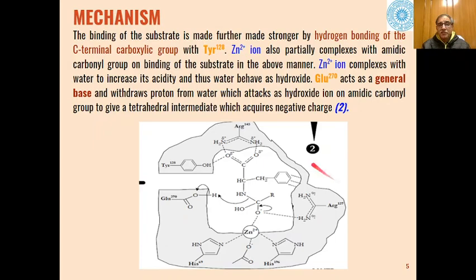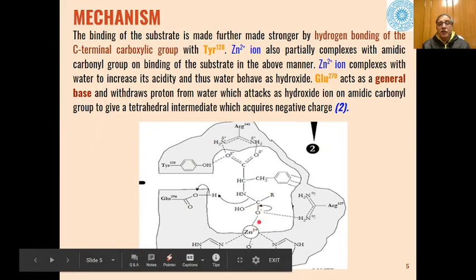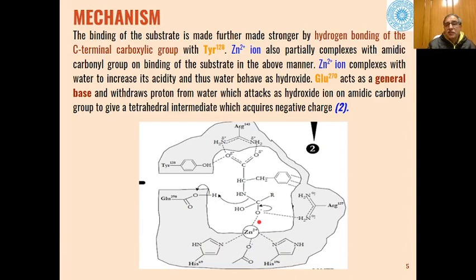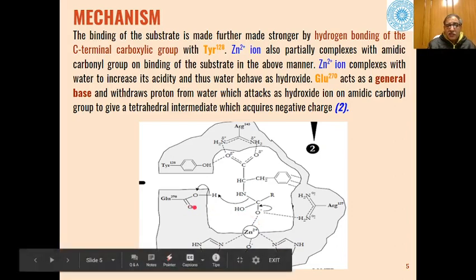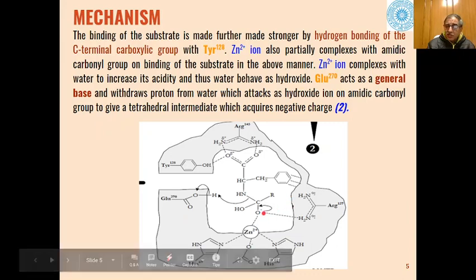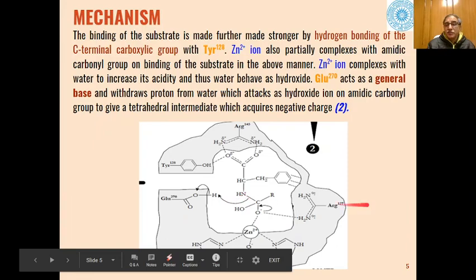In the next step, the binding of the substrate is made further stronger by hydrogen bonding with tyrosine 128. Zn2+ ions also partially complexes with amidic carbonyl to further strengthen the enzyme-substrate complex. This will act as a general base and this proton will be withdrawn by the substrate in an acidic manner. The negatively charged oxygen will become carbon-oxygen double bond and this carbon-nitrogen bond will break, and will be abstracted by this nitrogen in the second step.